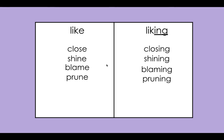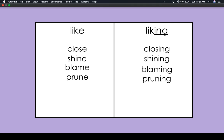Let's read our words together. We are going to start with the "like" column: like, close, shine, blame, prune — all of these have a silent E. Now the "liking" column: liking, closing, shining, blaming, pruning. All of these follow the same spelling pattern of dropping the E when you have an ending that begins with a vowel. Good job, guys. Bye.